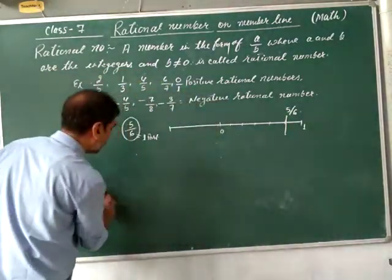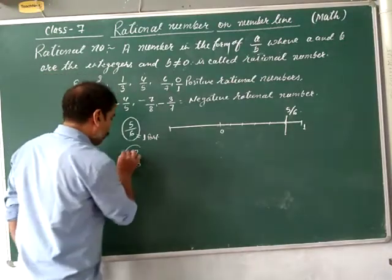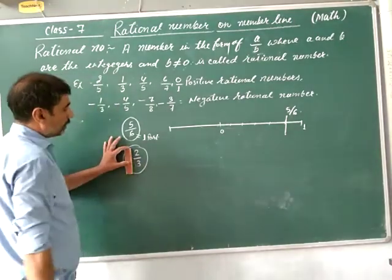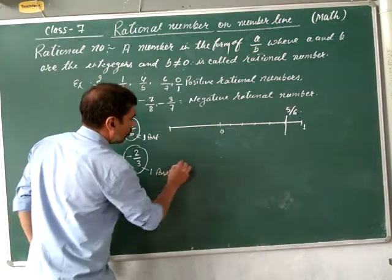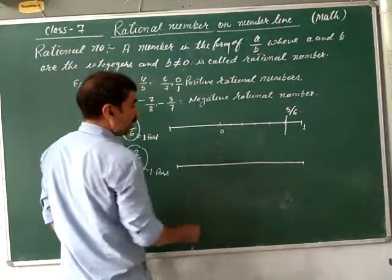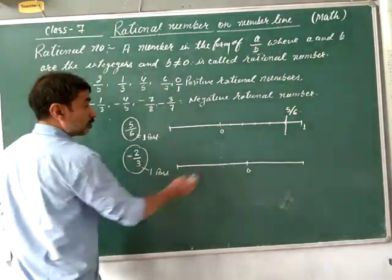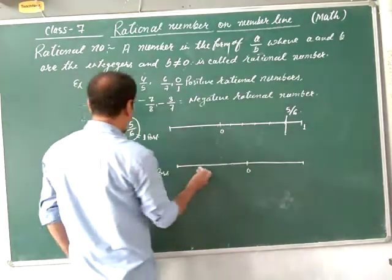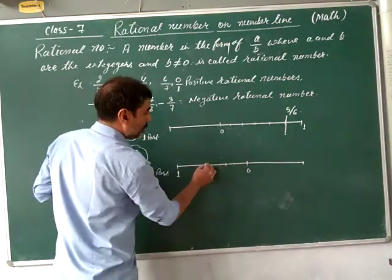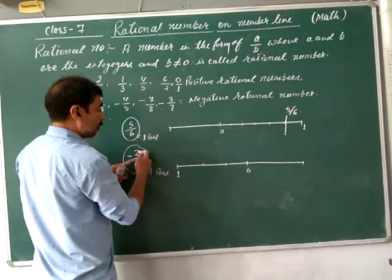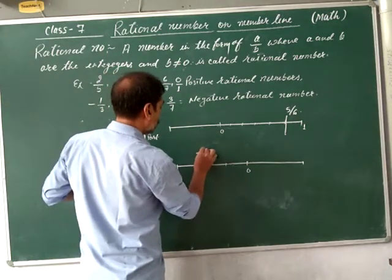Now for a negative rational number — for example, minus 2 by 3. Since it is negative, it is represented on the left side of 0. Take 1 part and divide it into 3 equal parts. Then count 2 parts to the left. This represents minus 2 by 3 on the number line.